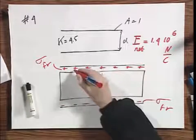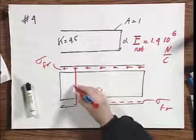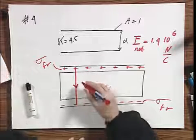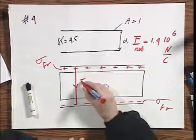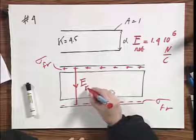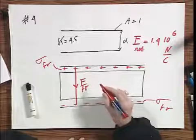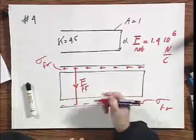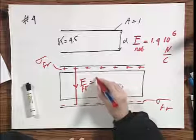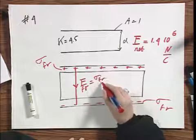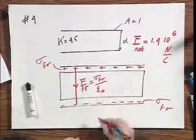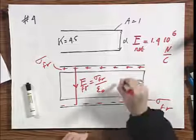In the absence of a dielectric, there would be an electric field. I call that E free. And that free field is easily calculable. That would be sigma free divided by epsilon zero, in the absence of this dielectric.